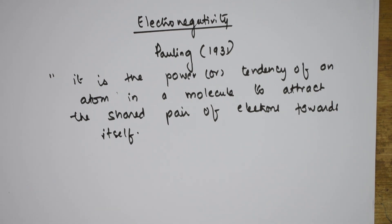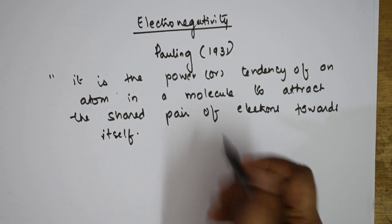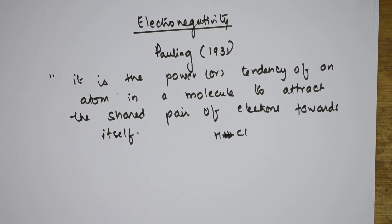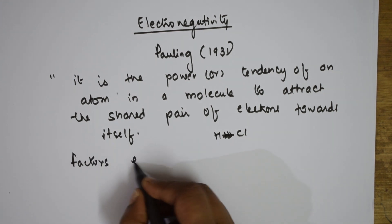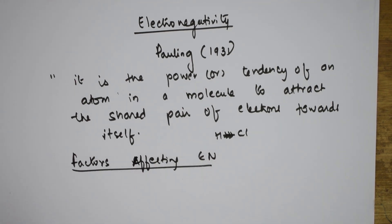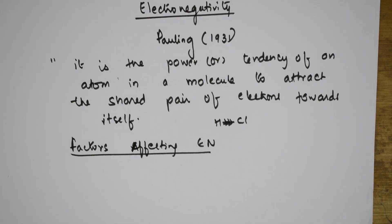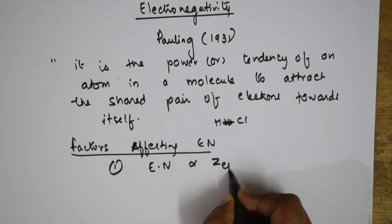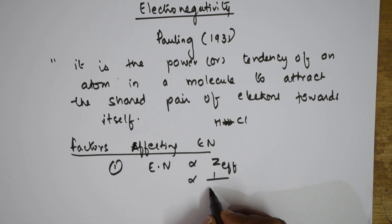Electronegativity is the tendency to drag the electron. For example in HCl, Cl is more electronegative so it tries to drag. Now, the first important factor affecting electronegativity: whenever a particular element has maximum Z-effective, it will have maximum electronegativity. So the first factor is — electronegativity is directly related to Z-effective and inversely related to atomic size.